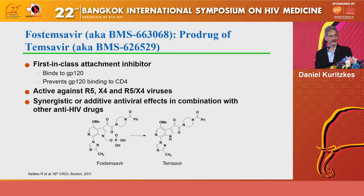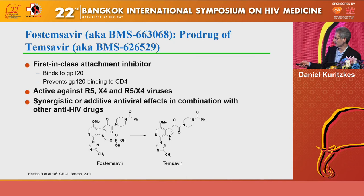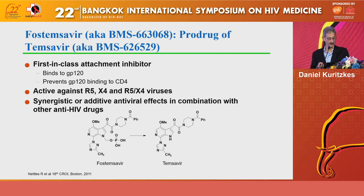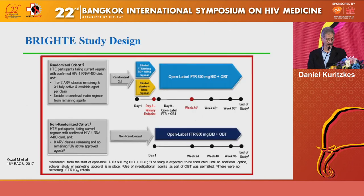Let me spend the last couple of minutes on another new agent, fostemsavir, which is also an entry inhibitor. Fostemsavir is a prodrug of temsavir, the active drug. This is a first-in-class attachment inhibitor that binds to gp120, therefore preventing viral attachment, is active against viruses regardless of which co-receptor they use, and is synergistic or additive together with other anti-HIV drugs.